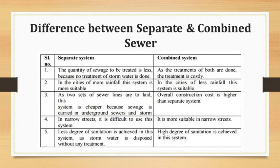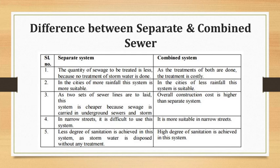Regarding sub-soil condition, if the sub-soil is hard, the separate system is more economical because its smaller sewers require less excavation. The combined system requires larger sewers and more excavation, making it uneconomical in hard sub-soil. Regarding space consideration, when space available for laying sewers is restricted, the separate system is not preferred and the combined system is used instead.